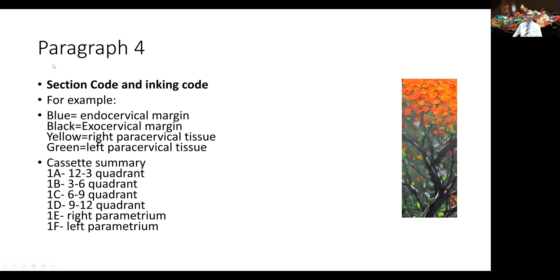And finally, paragraph four should include the section code and inking code that allows one to navigate back and forth between the microscopic slides and where that tissue arose from. So, in the case of a cervical excision: blue is the endocervical margin, black is the exocervical margin, yellow is the right paracervical tissue, green the left paracervical tissue. The cassette summary is as follows: 1A, 12 to 3 o'clock quadrant, and so forth. So those details allow someone to look at a slide that's only given a number and a code and know this is from the 9 to 12 o'clock quadrant, and therefore know whether or not the tumor is at the margin at that site.